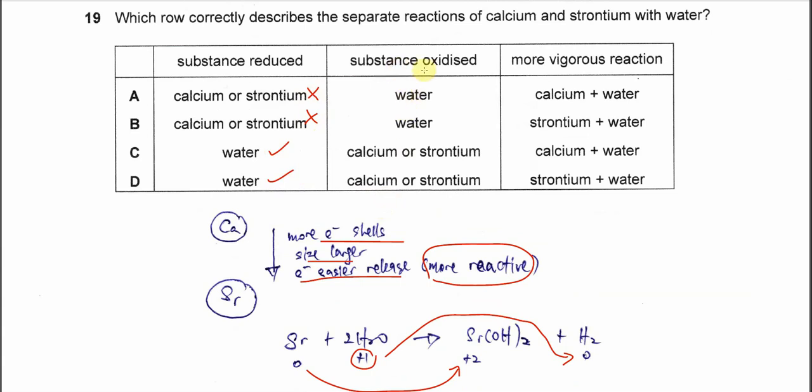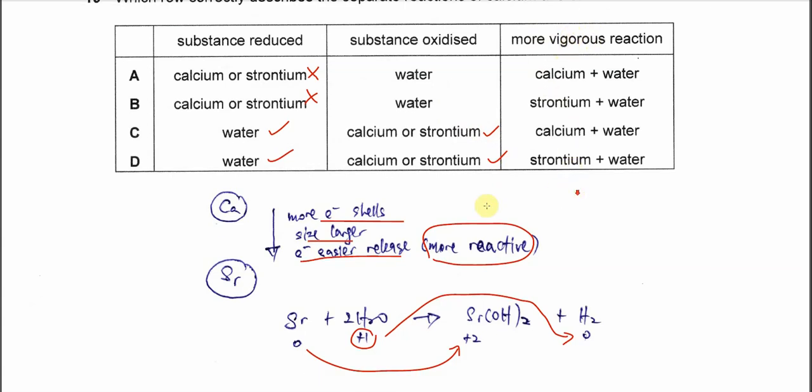And the substance that gets oxidized, of course, is calcium or strontium. So now which one is more vigorous? More vigorous means which one reacts faster with water, which one is more reactive. So we know that strontium is more reactive because it's easier to release electrons. So the answer therefore must be D.